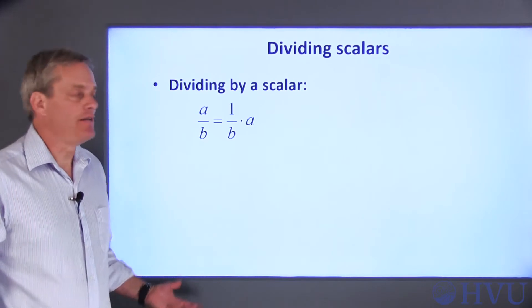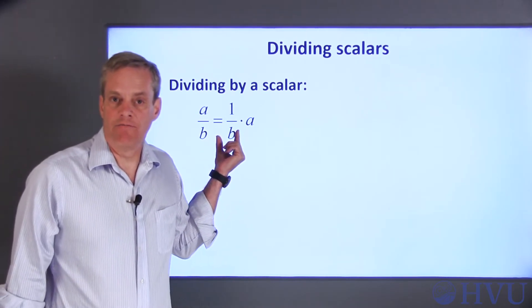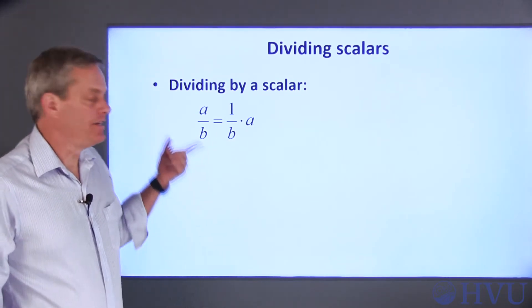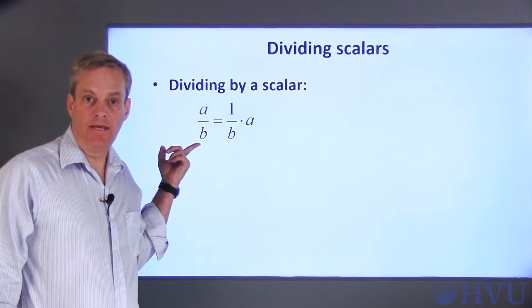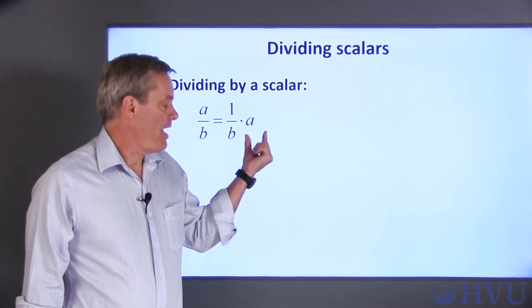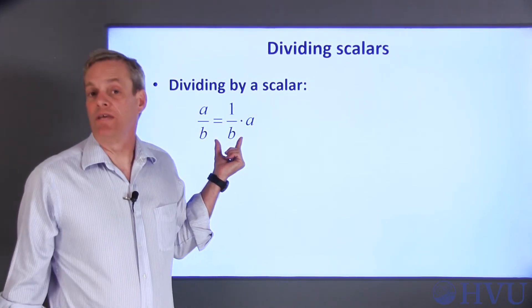Division can be done in terms of multiplication by an inverse. So, I can divide a number A by a number B, by multiplying A by 1 over B, or the inverse of B.